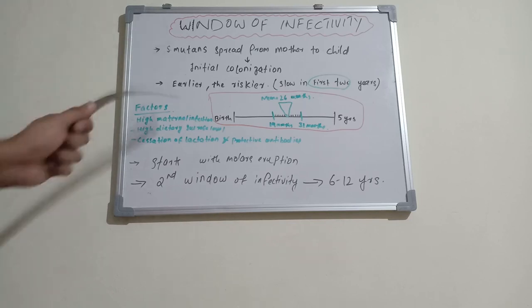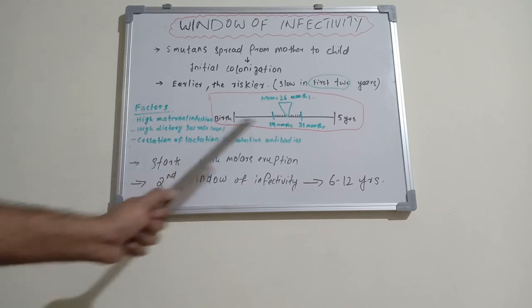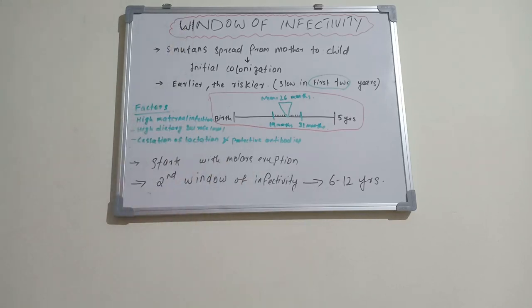That's all about window of infectivity and Streptococcus mutans causing dental caries in a child's mouth, and second window of infectivity during 6 to 12 years. I will come up with a new session on Dentistry and More. Thank you.